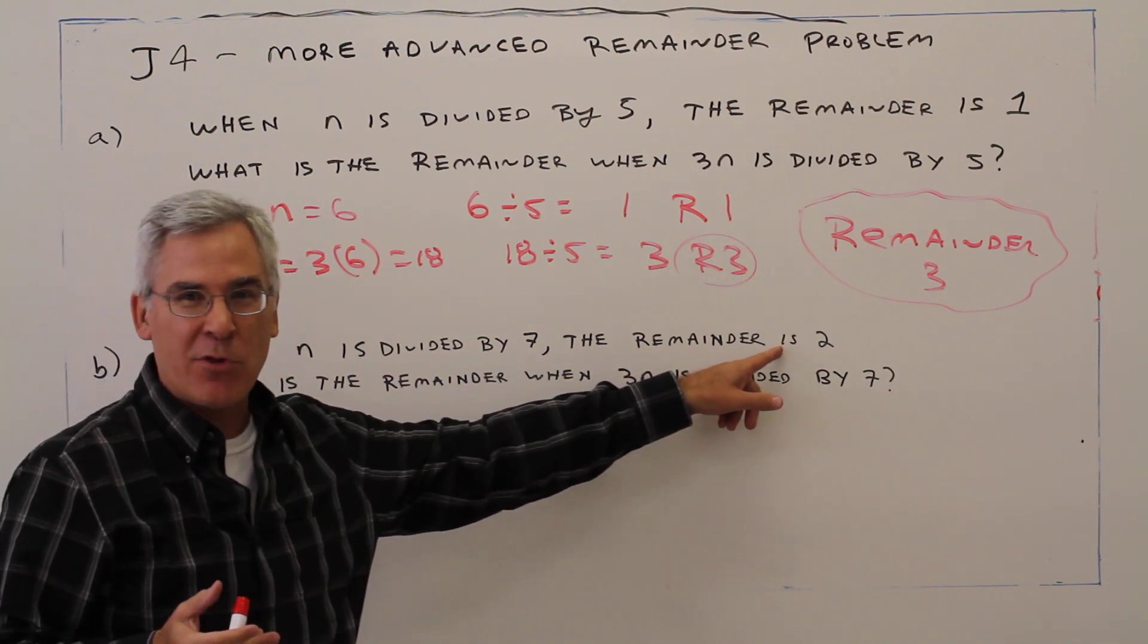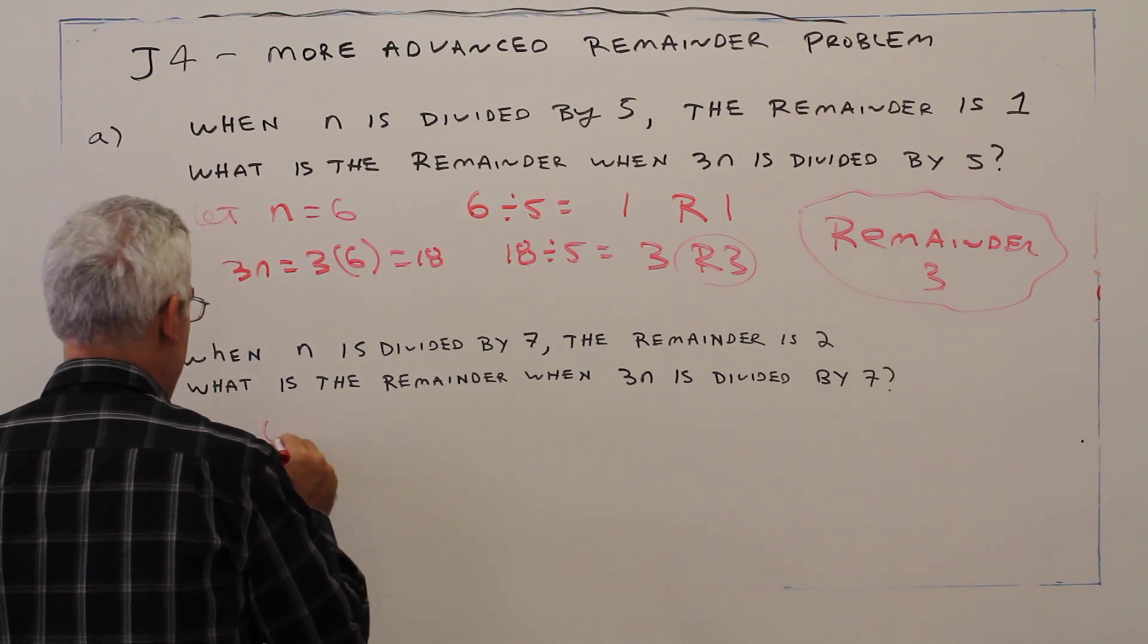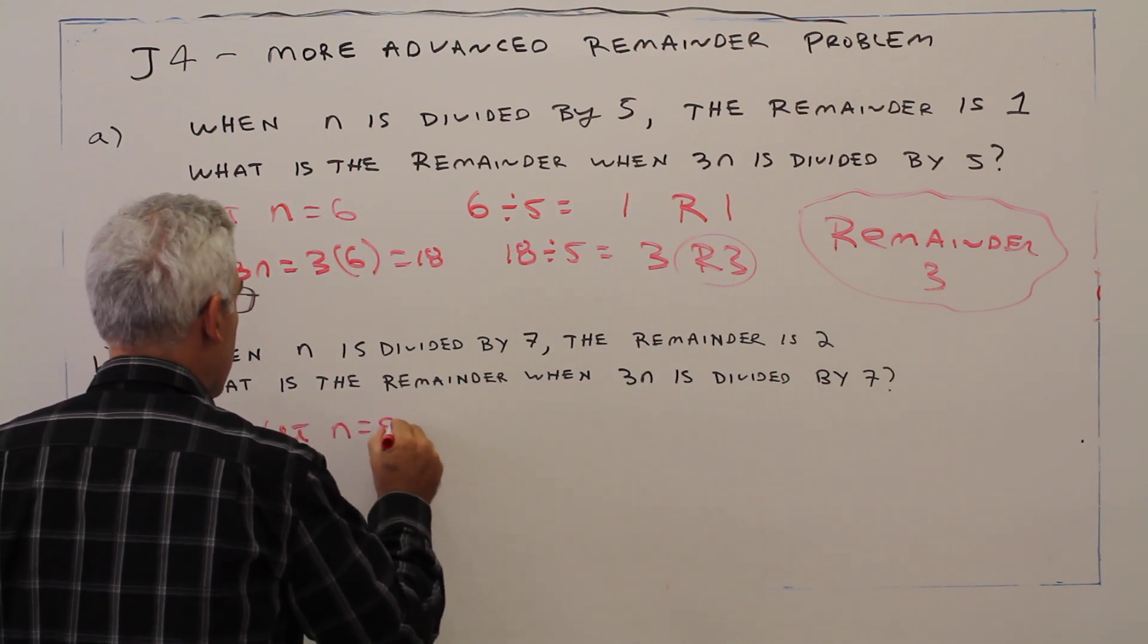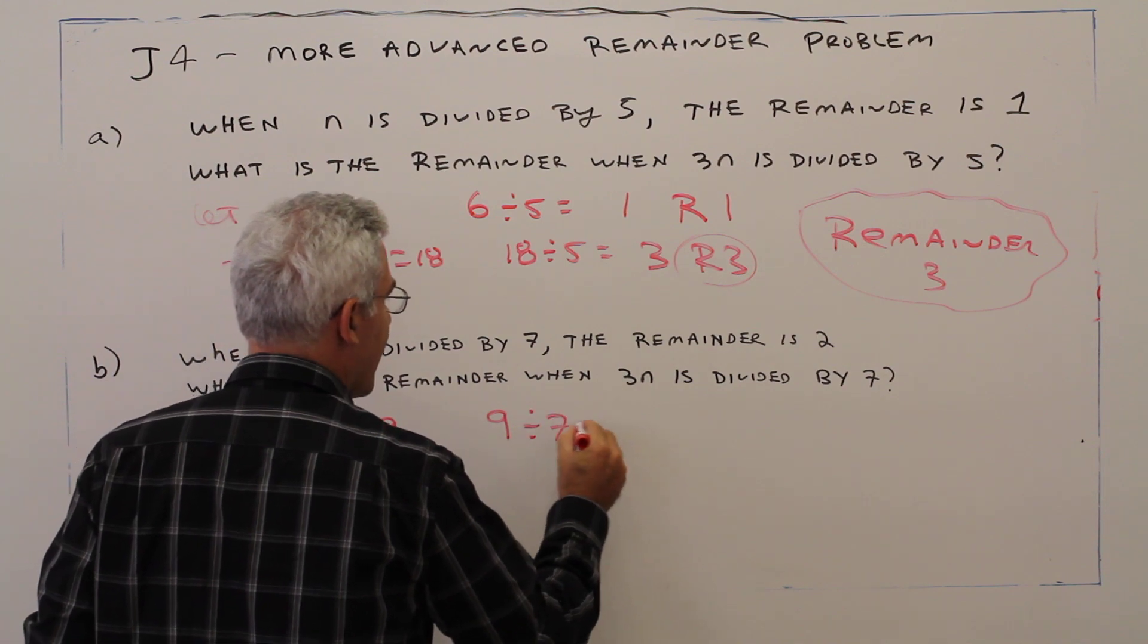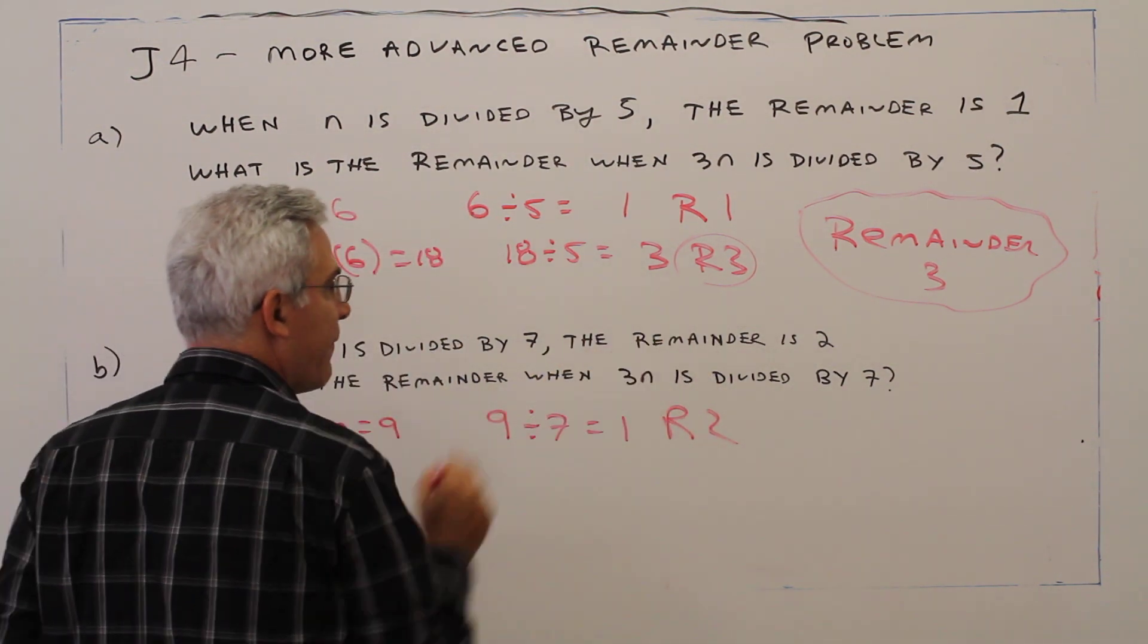Again, if the remainder is 2, it's going to just be 2 more than that, so I'm going to let n be 9. So 9 divided by 7 equals 1, remainder 2. I've verified that first part.